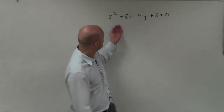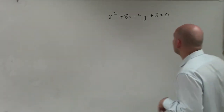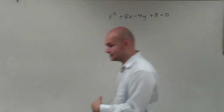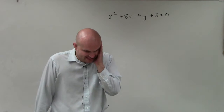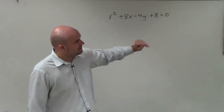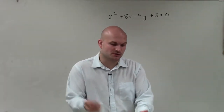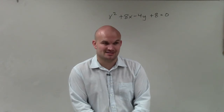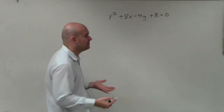Welcome. What I have here is x squared plus 8x minus 4y plus 8 equals 0. What we want to do is go ahead and determine what the focus is, the directrix, and the vertex, as well as graph the parabola.